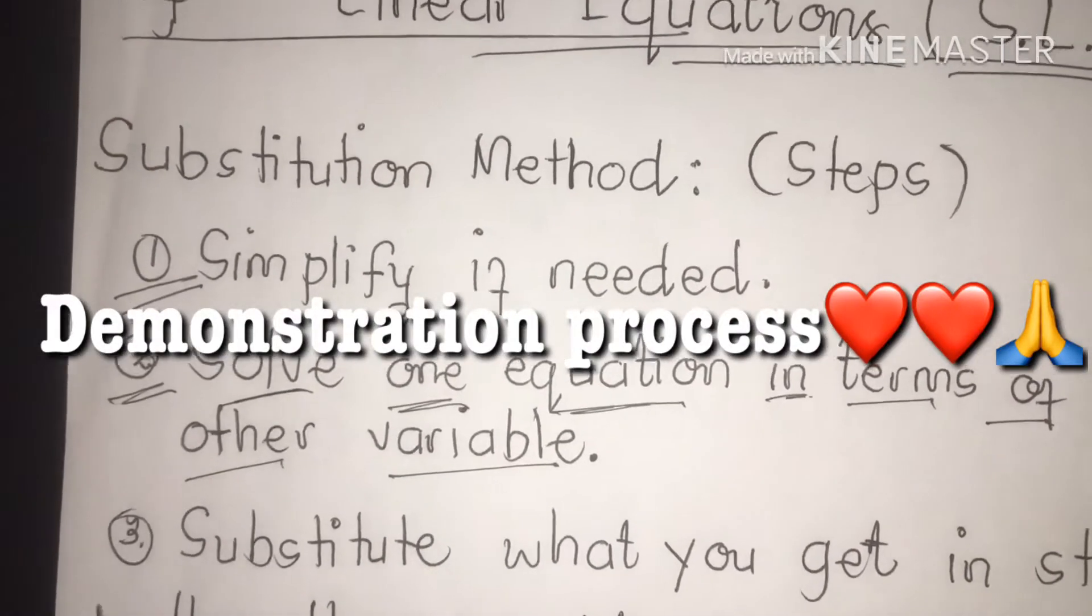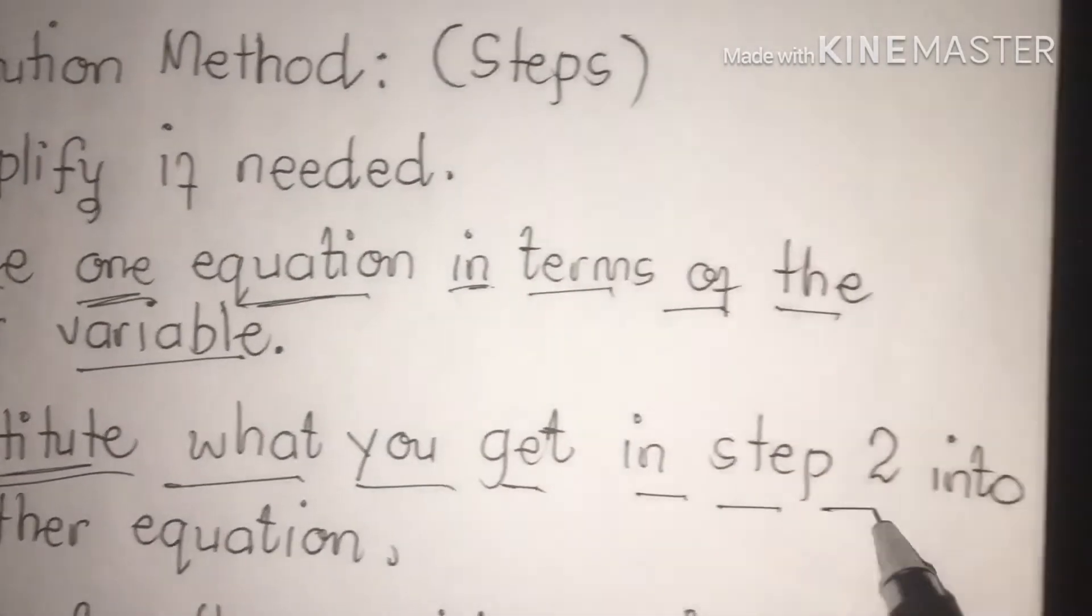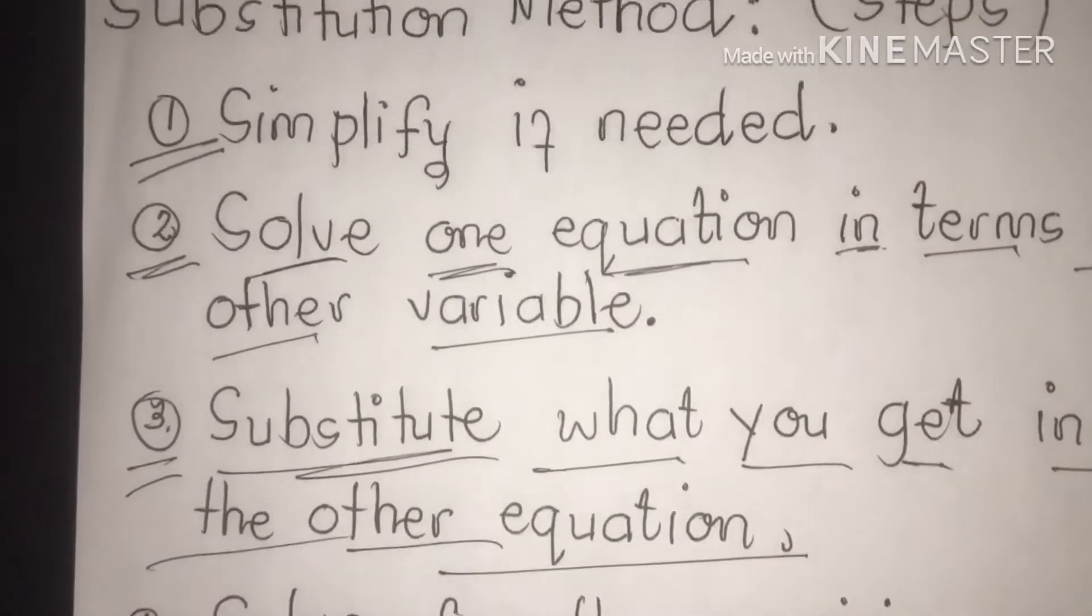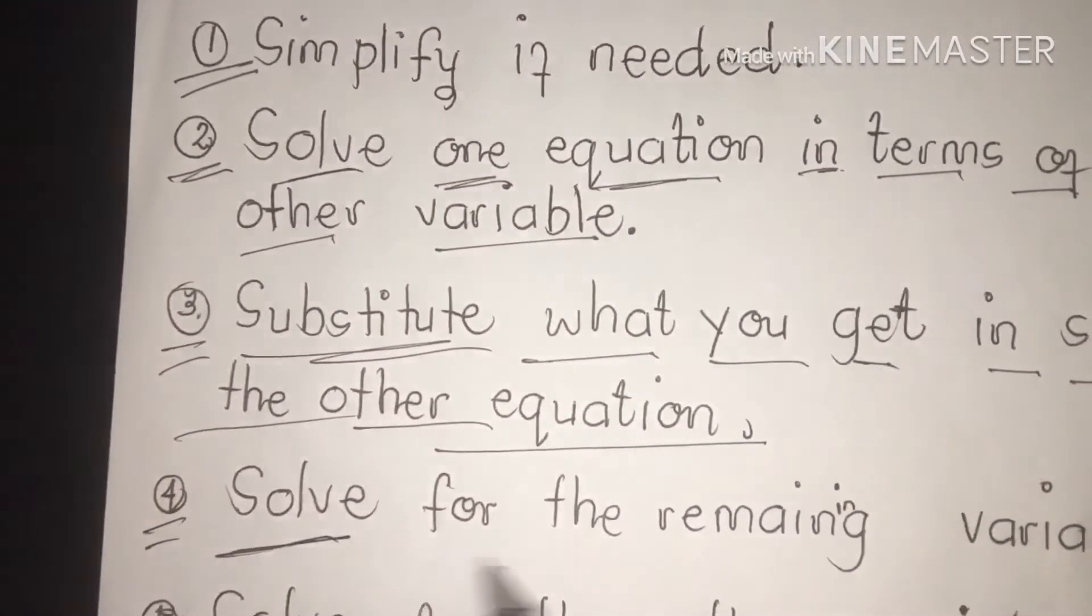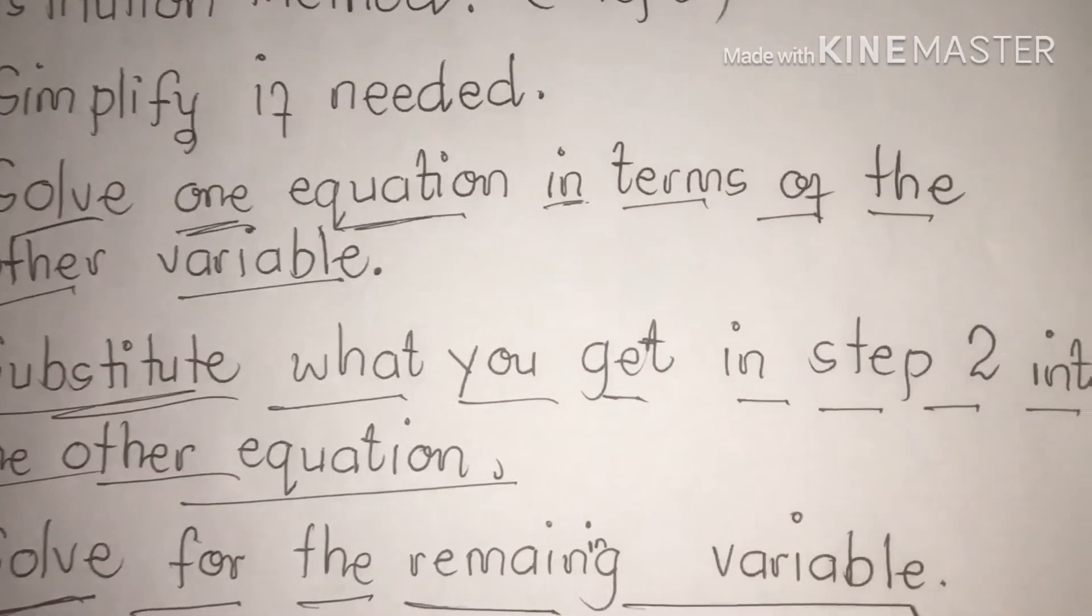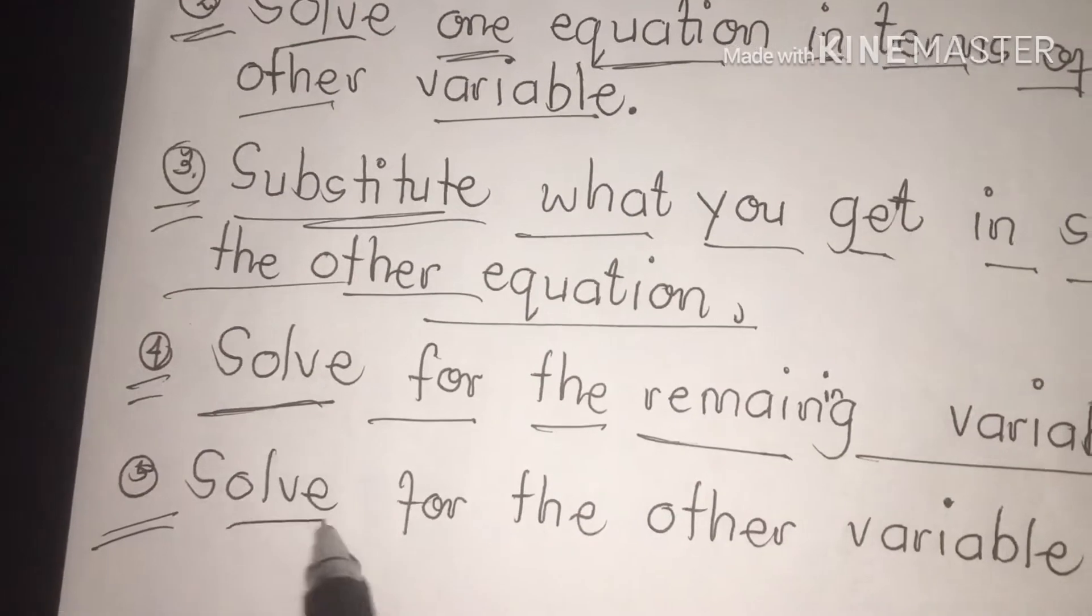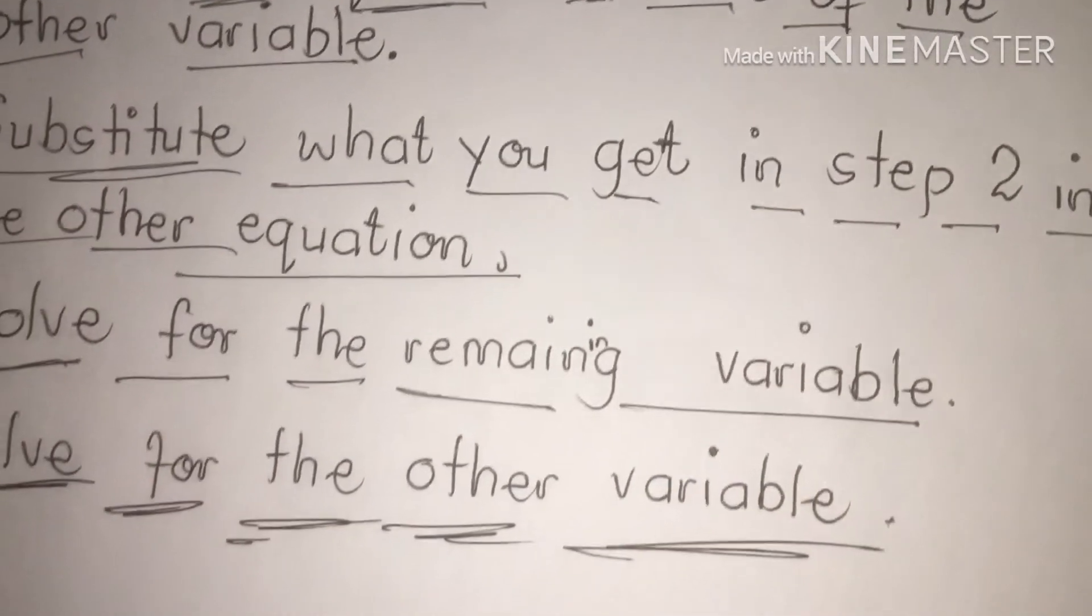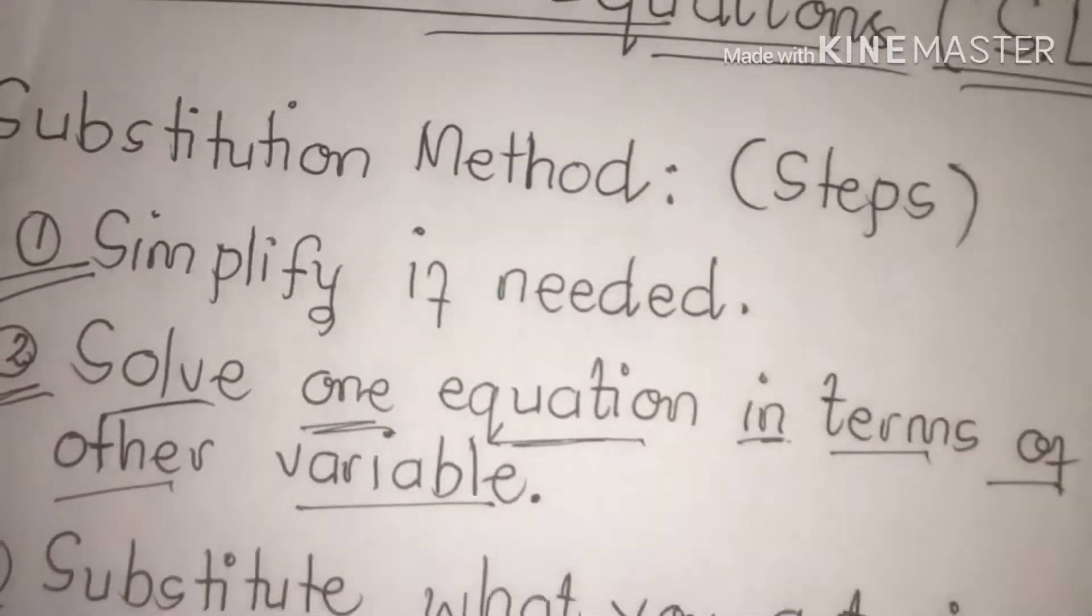Third, you are going to substitute what you get in step two into the other equations so that you can solve it simultaneously. Four, you are going to solve for the remaining variable. And fifth one, you are going to solve for the other variable.